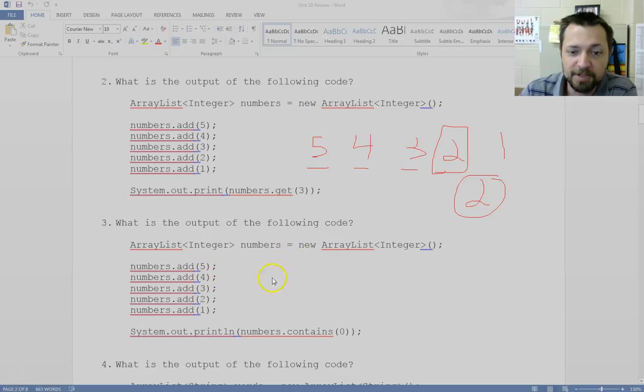Here, we do the same thing. 5, 4, 3, 2, 1. Does it contain a 0? Nope. So we get the answer false.